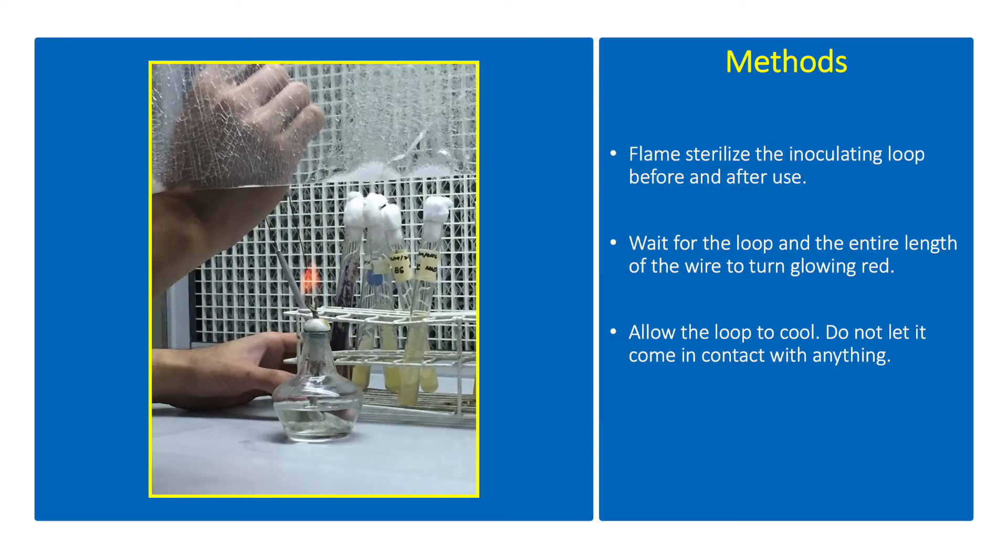Perform the transfer of inoculum inside the laminar flow hood or biosafety cabinet. Disinfect the hood with 70% ethanol. Light an alcohol lamp and place the cultures, slants, and tubes near the alcohol lamp. Use a test tube rack and do not lay the tubes on the table.